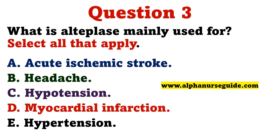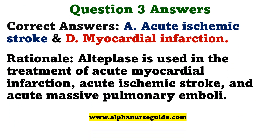Practice question: What is Alteplase mainly used for? Select all that apply. A. Acute ischemic stroke. B. Headache. C. Hypotension. D. Myocardial infarction. E. Hypertension. The correct answers are A — acute ischemic stroke — and D — myocardial infarction. Alteplase is used in the treatment of acute myocardial infarction, acute ischemic stroke, and acute massive pulmonary emboli.